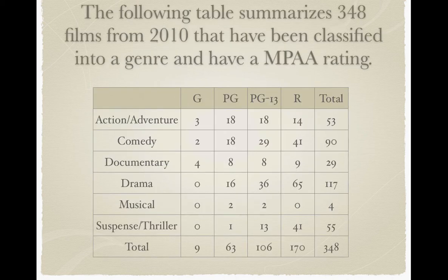Now we're going to do a little example. If you take a minute to look through this table, you'll see that it gives you movie ratings and movie genres. There were 348 total films from 2010, and they've all been classified into both a genre and a rating. We're going to answer a few questions about these.